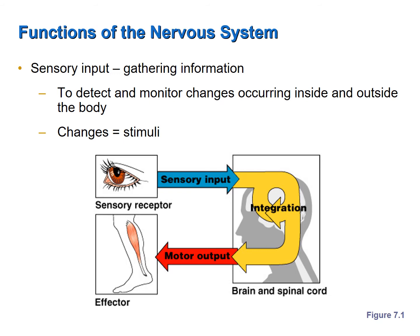What is sensory input? Sensory input is gathering information, detecting stimuli or changes, and then communicating information about those changes to an integration center. There are sensory receptors in your skin, in your joints, inside your body. They detect stimuli or changes and send information about those changes as sensory input to an integration center.